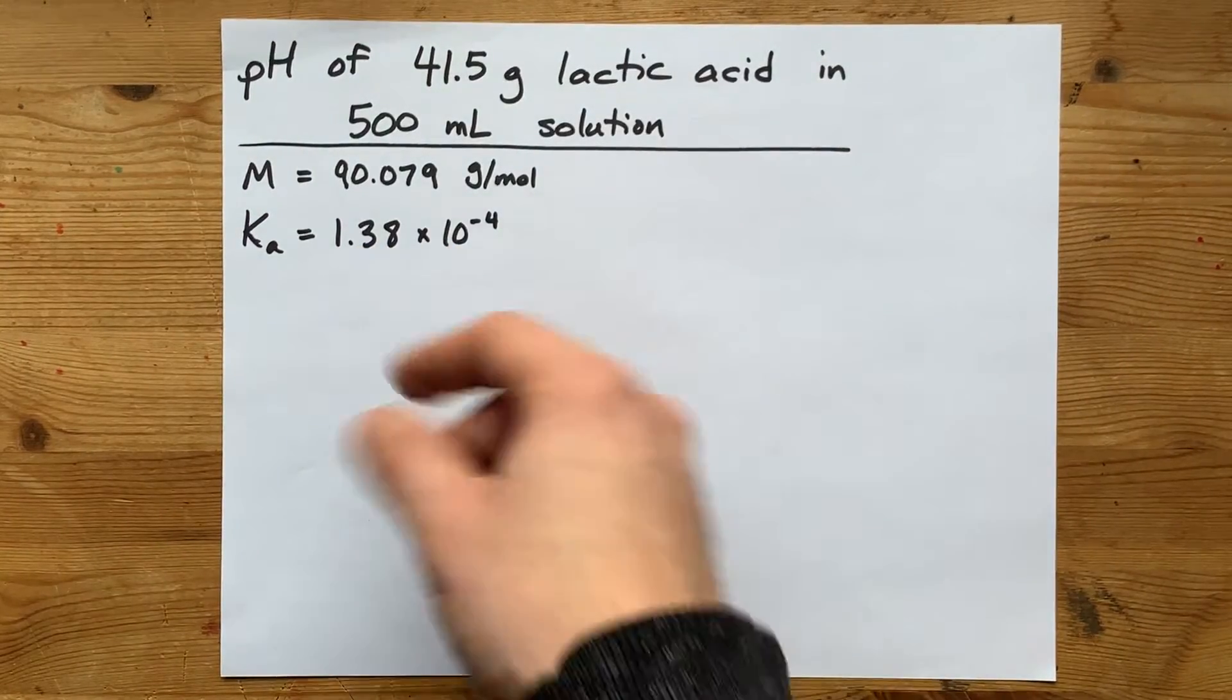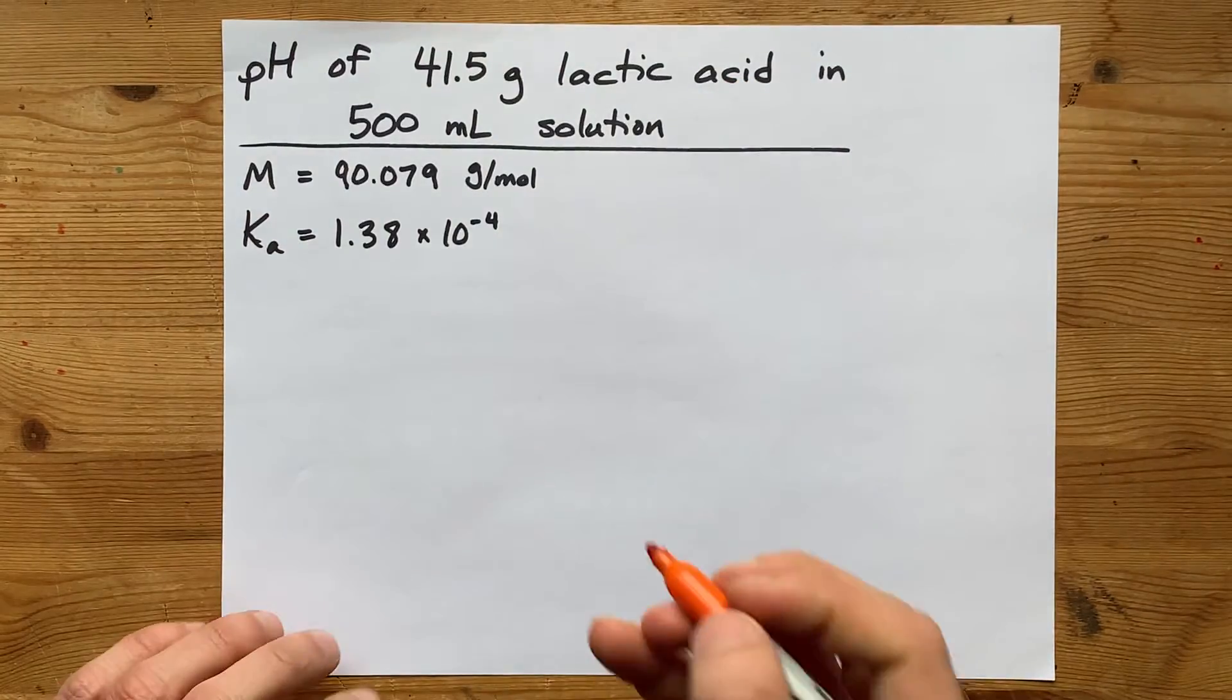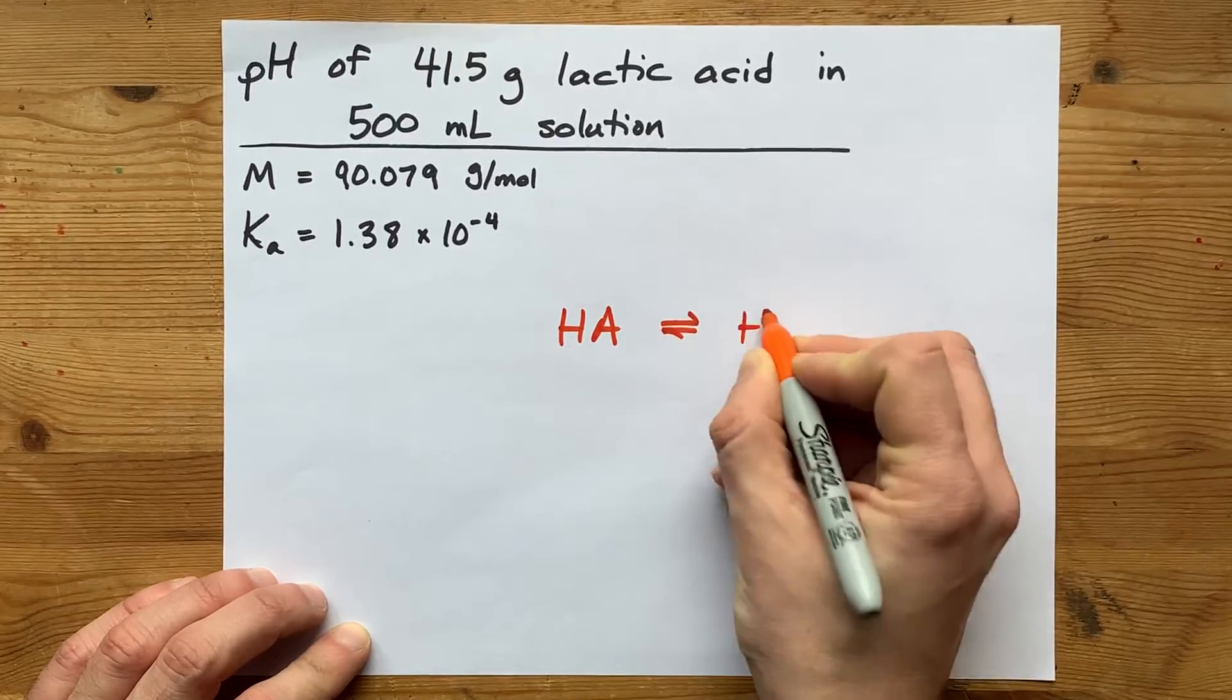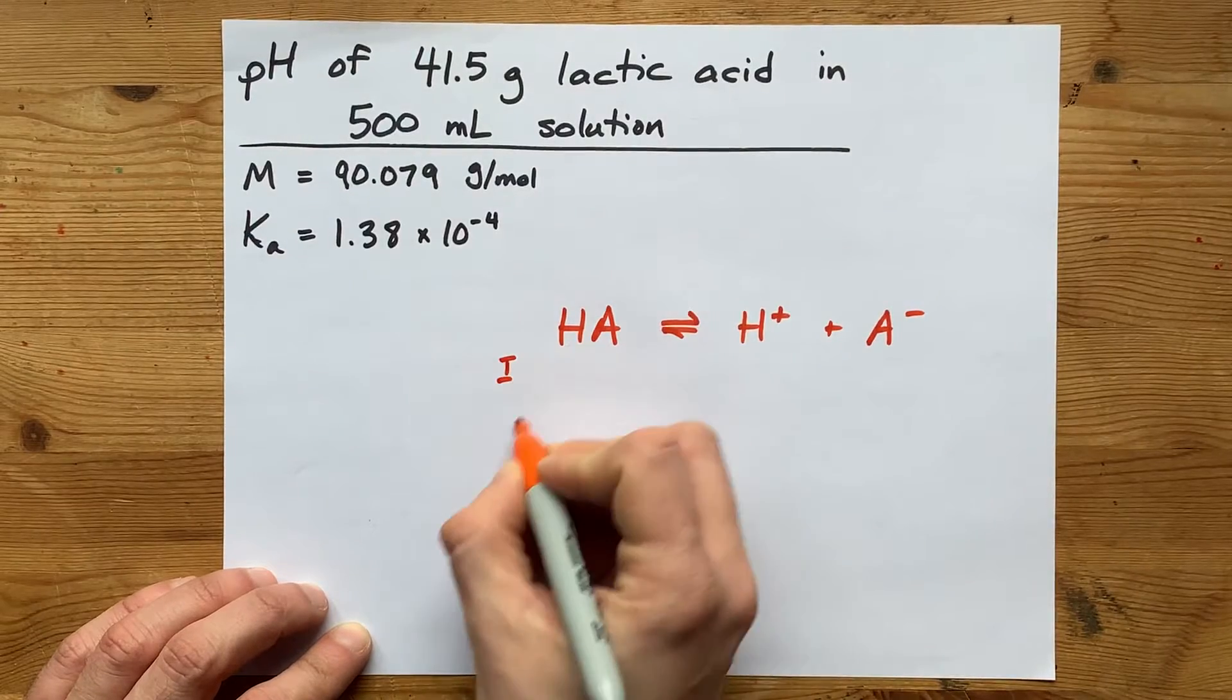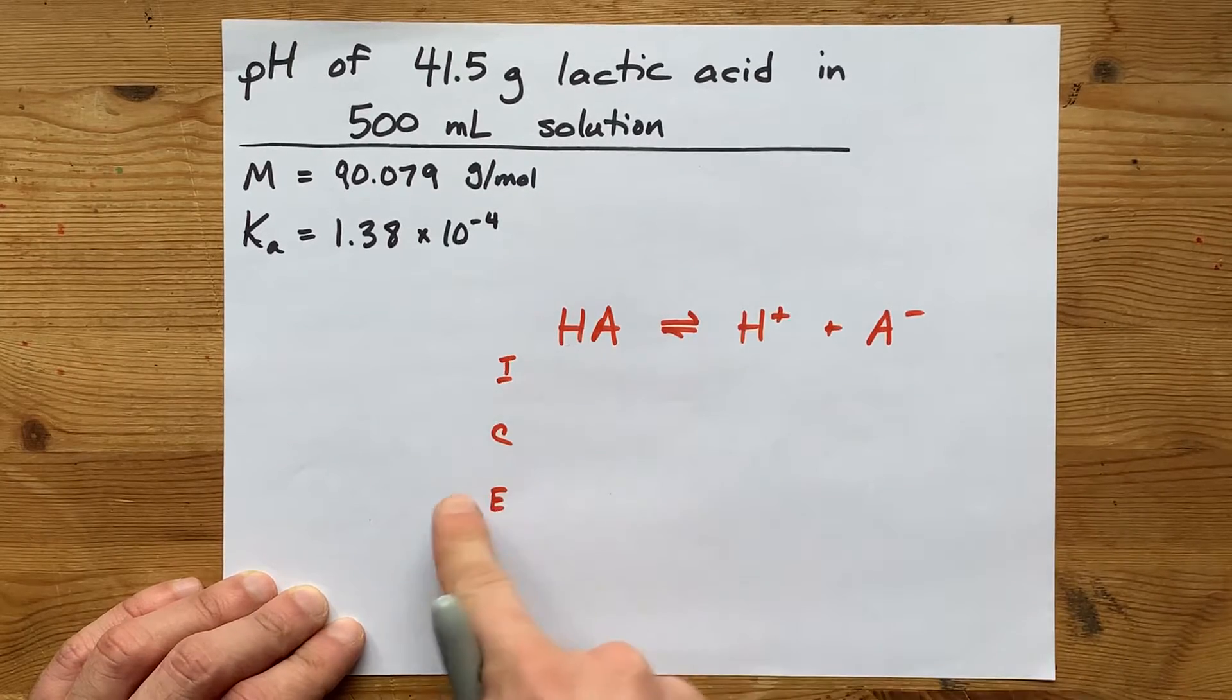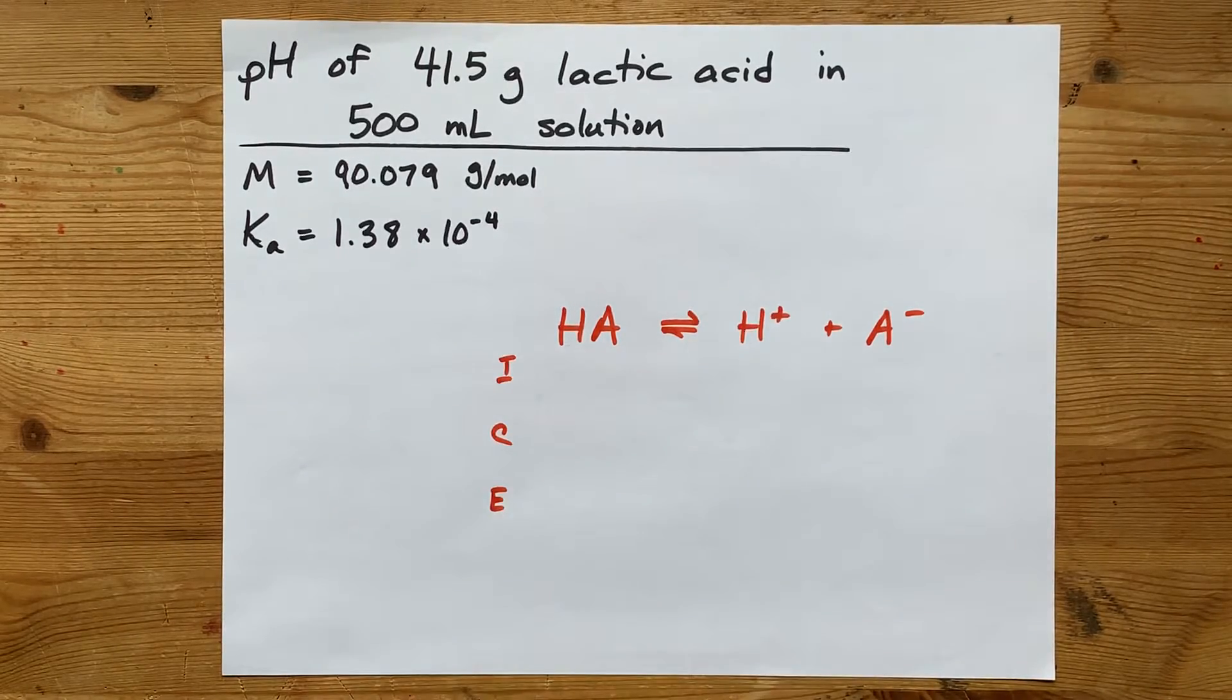The way that you deal with a weak acid and trying to find its pH is generally with equilibrium. The Ka represents the equilibrium of that acid with H plus in solution and its conjugate base. You may have been introduced to something called an ice table, where you put initial concentrations, the changes, and the equilibrium concentrations. We're about to do that, but you need concentration in moles per liter to do that.